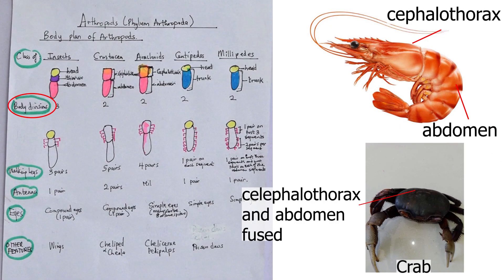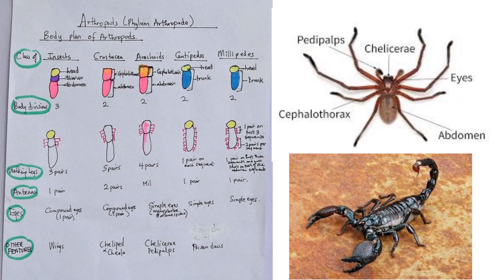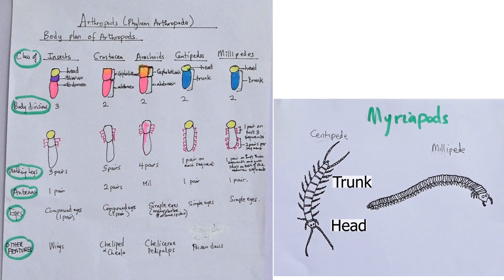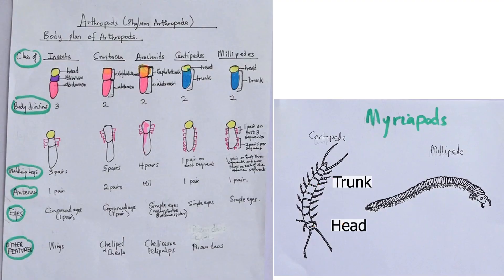Crustacea have two body divisions: the head and thorax are fused together and known as the cephalothorax, plus the abdomen. Arachnids have the same body divisions — cephalothorax and abdomen.